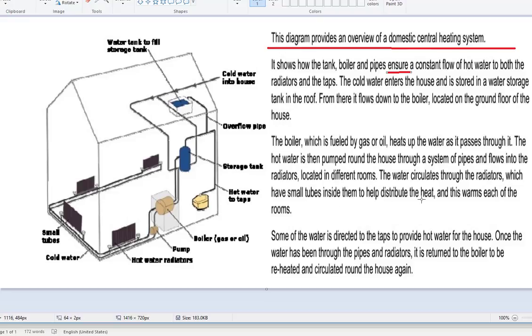Which has small tubes inside them to help distribute the heat and this warms each of the rooms. Some of the water is directed to the taps to provide hot water for the house. See that here. Once the water has been through the pipes and the radiators, it's returned to the boiler to be reheated and recirculated again. If we follow the arrows, then we see it loops.